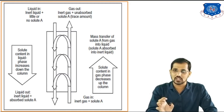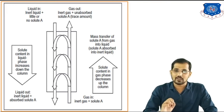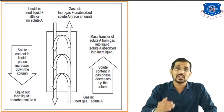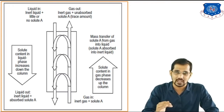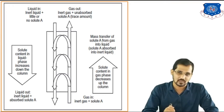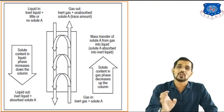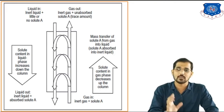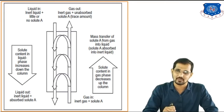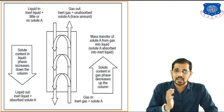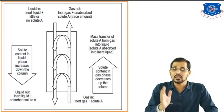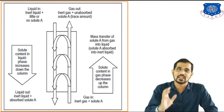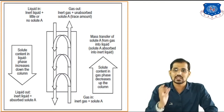The outlet liquid stream has maximum amount of solute A, since we are absorbing solute from the gaseous stream — so liquid out equals inert liquid plus absorbed solute A. For the gaseous stream, gas inlet contains inert gas plus solute A. We remove solute A using the liquid stream, so gas inlet has maximum solute A while the outlet has minimum. The gas outlet stream consists of inert gas plus unabsorbed solute A.